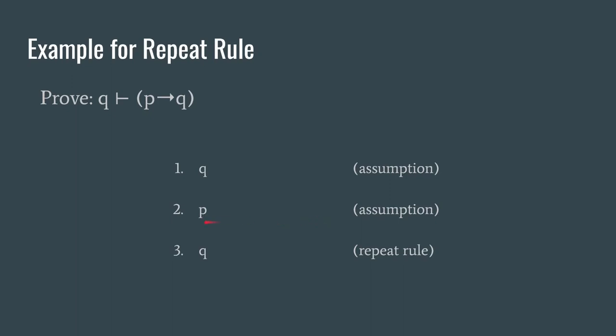Notice what we've done here is we've simply applied the repeat rule on line one and that's enough to get us what we wanted. Notice we've assumed P and we've then derived Q on a following line. Well that gives us enough to say the introduction of the arrow rule applies on lines two and three. We close off our box to discharge or withdraw these assumptions and we have the conclusion that we were aiming towards.